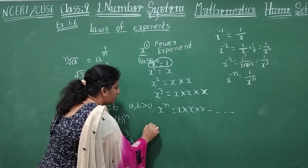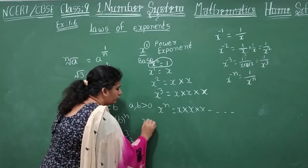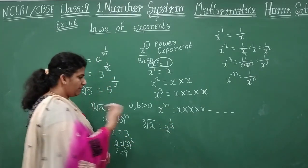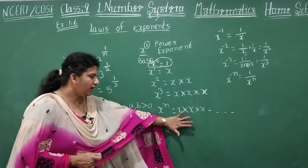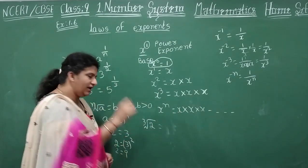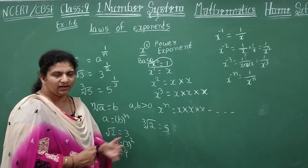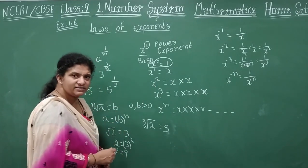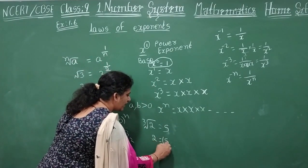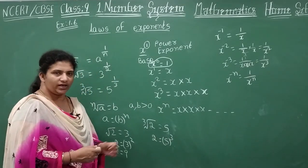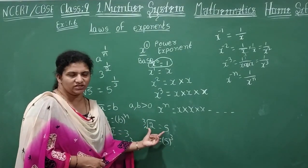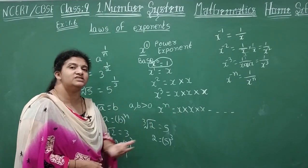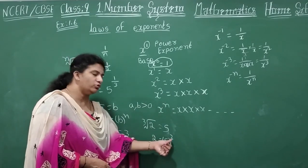Keep the cube root of 2 — how do you rewrite this? 2 power 1 by 3. Suppose you need to remove this cube root and you have some other number like 5 on the right side. You send the cube root to the other side, so 2 equals 5 whole power 3. Whatever the order there, that power you apply on the right-hand side. Now let's see the laws of exponents.